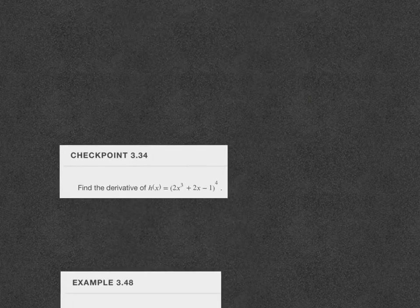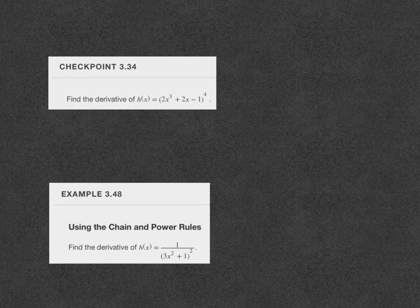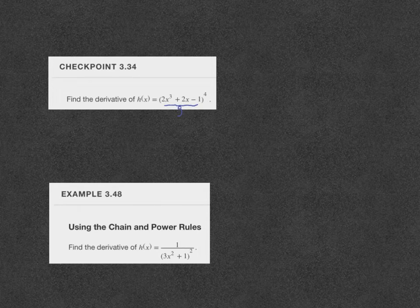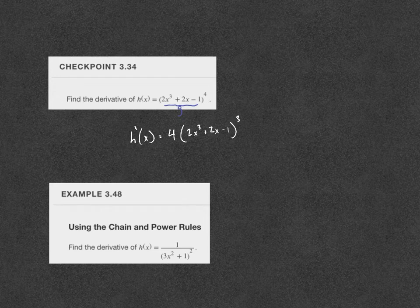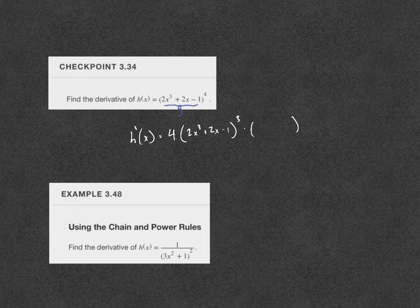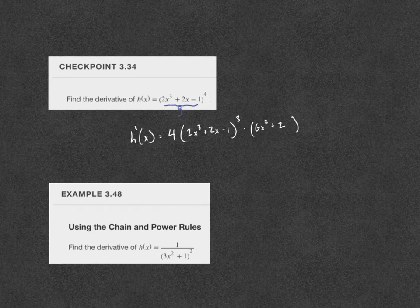Let's look at an example. H of x is the quantity (2x³ + 2x − 1) raised to the fourth power. Here, g is the stuff inside the parentheses. The chain rule says that h prime of x — the derivative of the outer nested function — is 4 times the inside to the third power, keeping the inside (2x³ + 2x − 1) the same. Then we multiply by the derivative of the inner function: the derivative of 2x³ is 6x², plus 2, minus 0. We can clean that up — that's how the chain rule works.